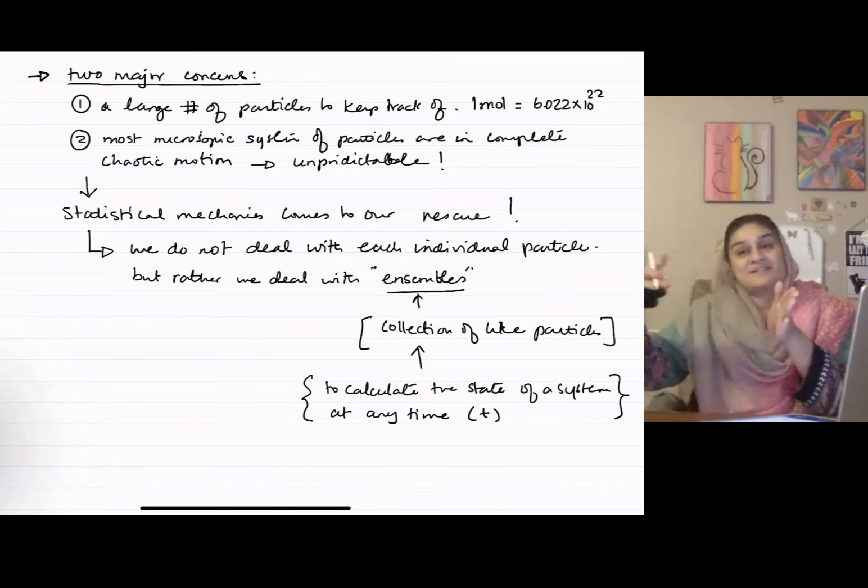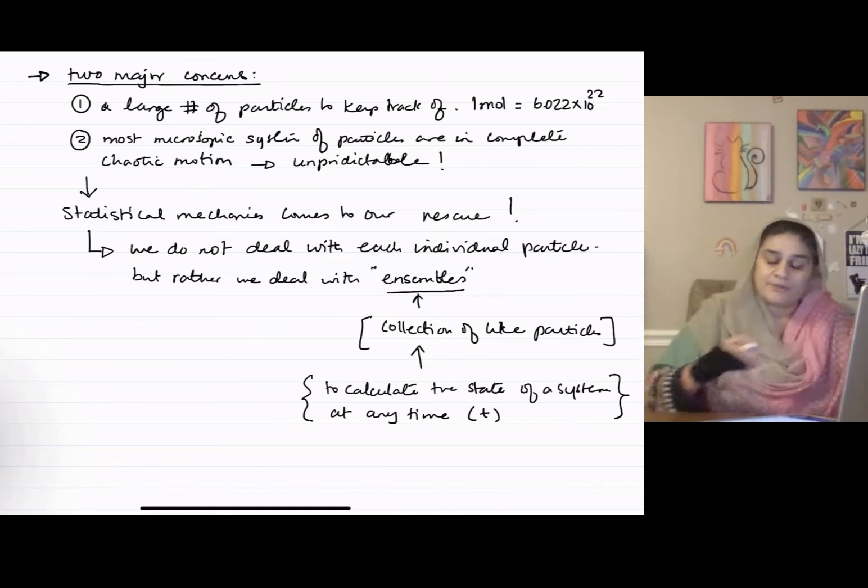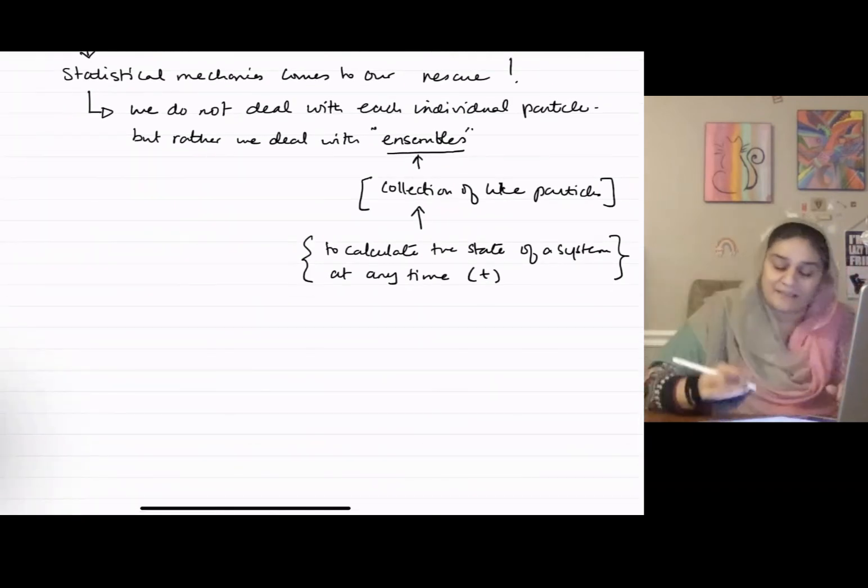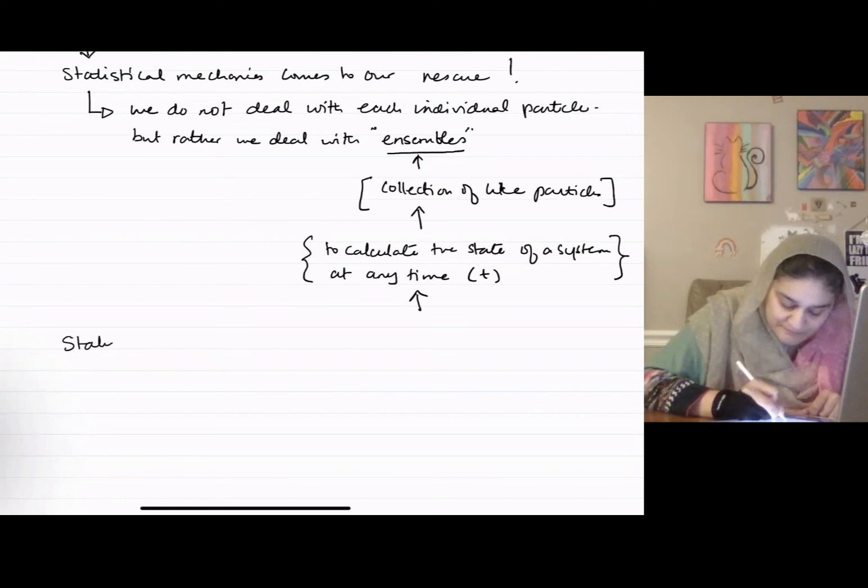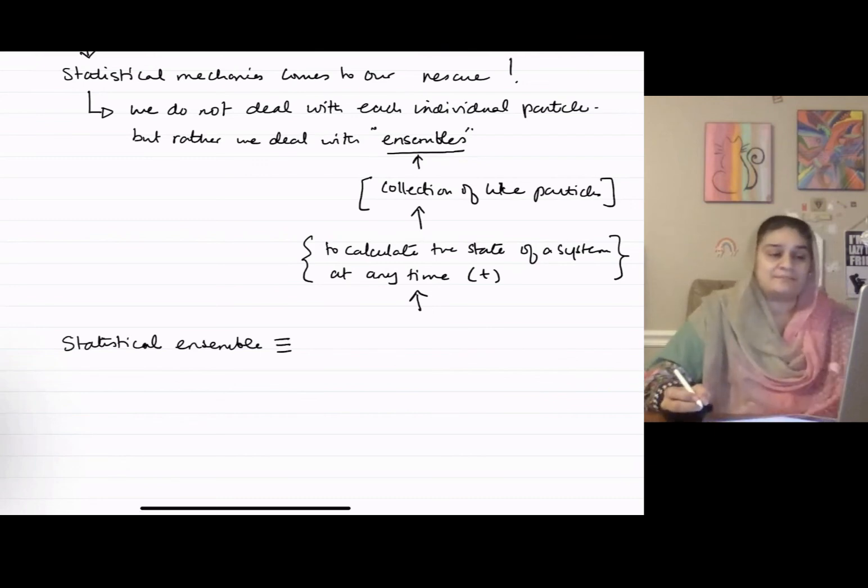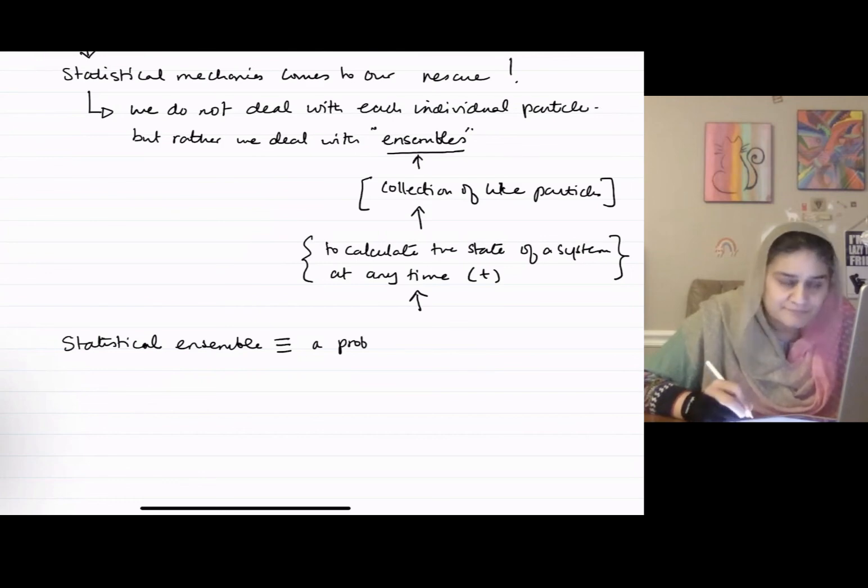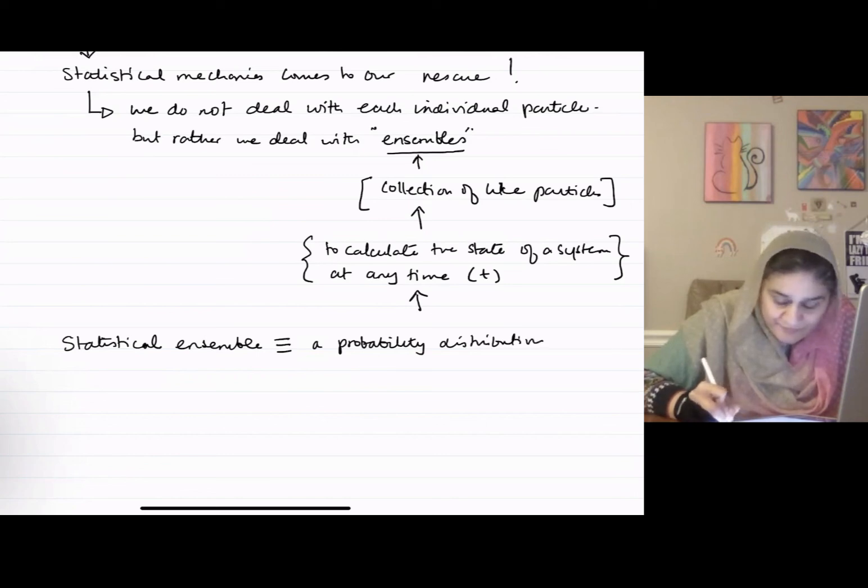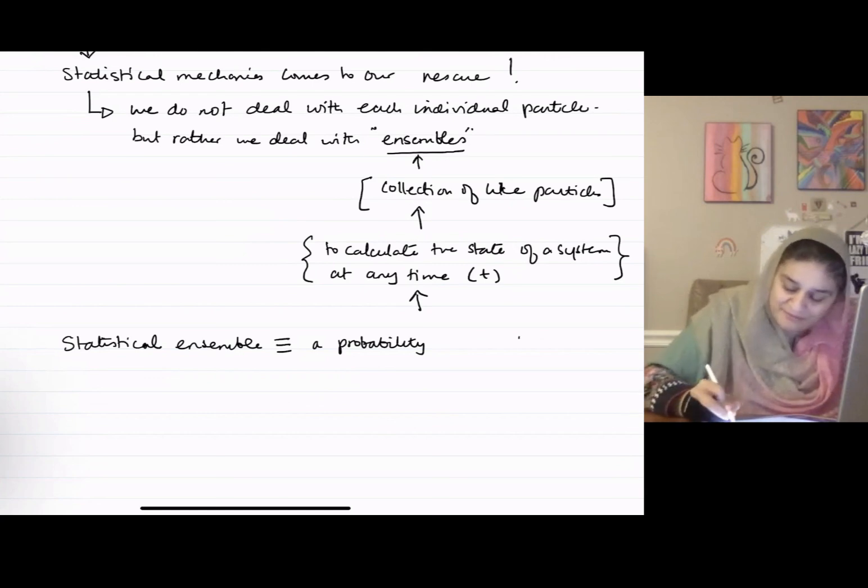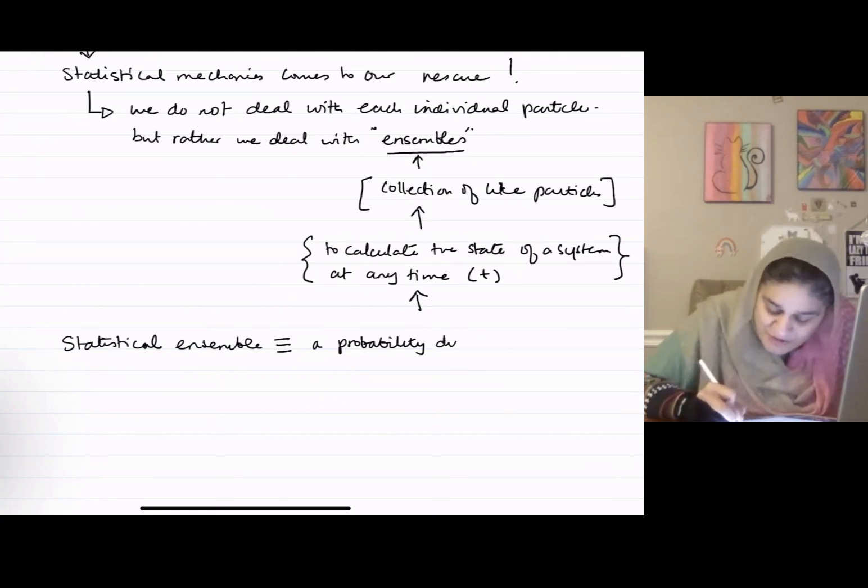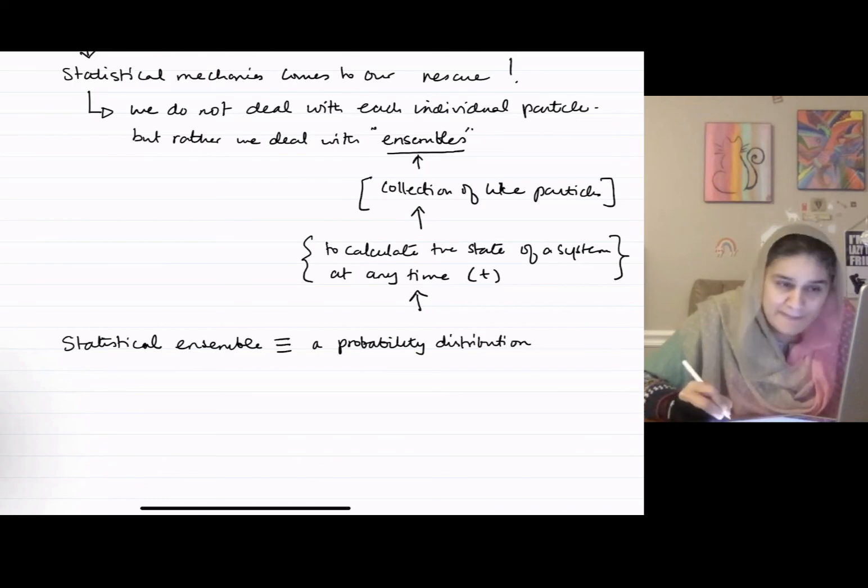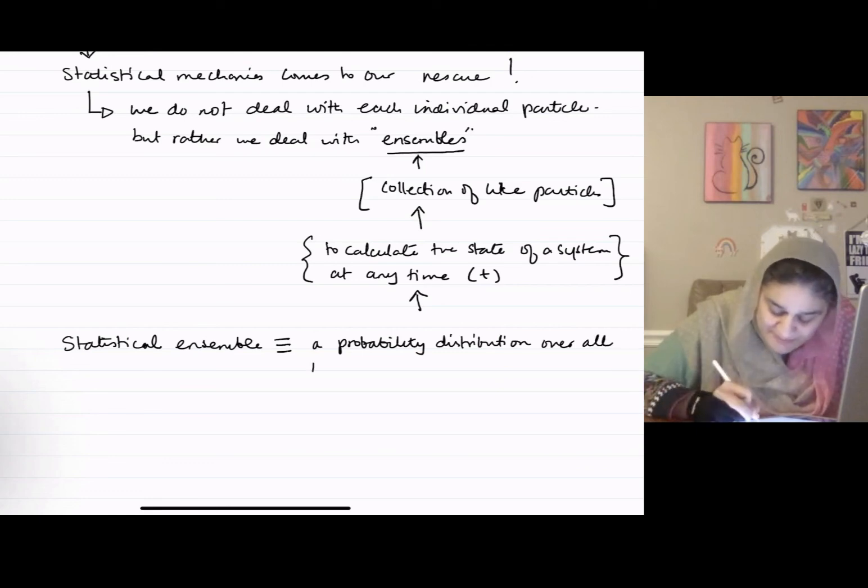And then we want to see what that system will do in the future. More broadly, I can define a statistical ensemble as a probability distribution over all possible states of the system.